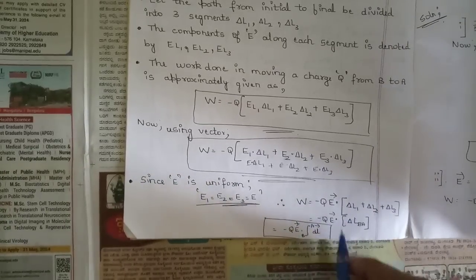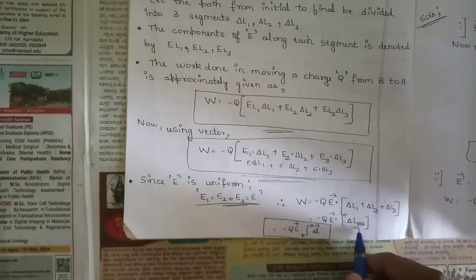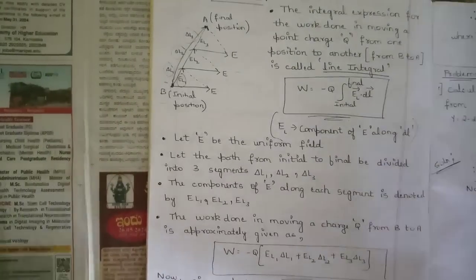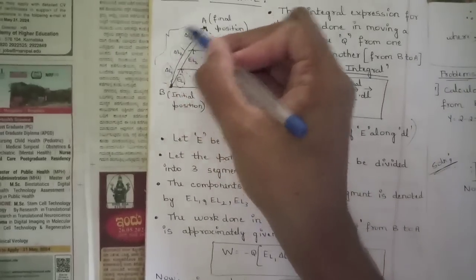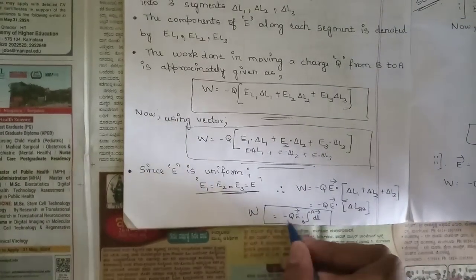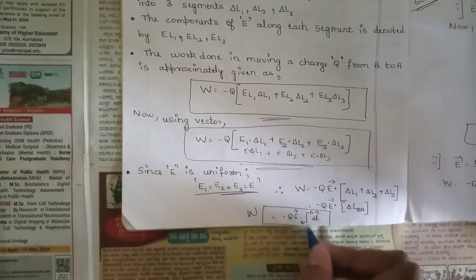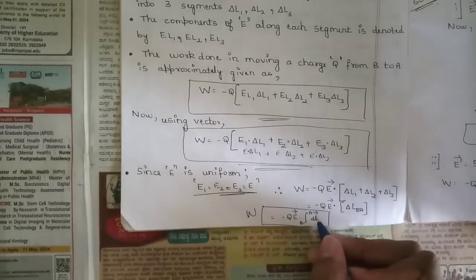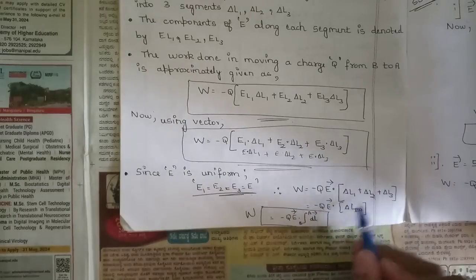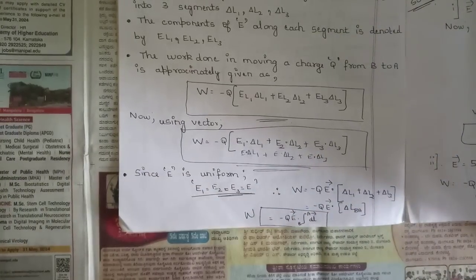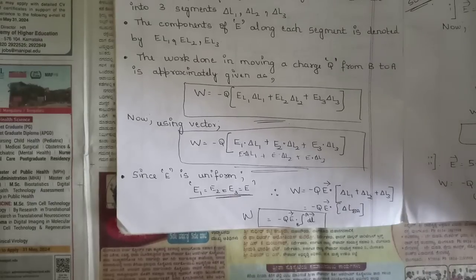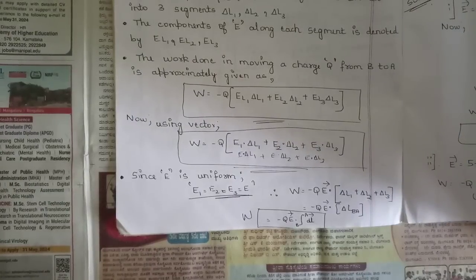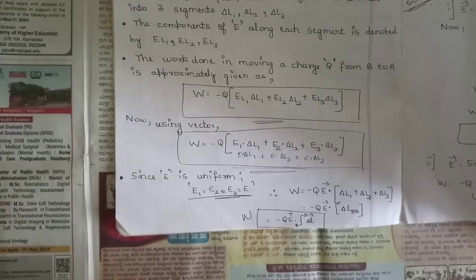Therefore the work done expression becomes W = −q E · ∫(B to A) dl, where the sum of segment displacements is replaced by the integral dl. This is the line integral formula for work done when an electric field acts along a path. We will now solve a problem to clarify the concept.